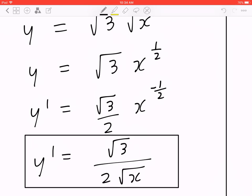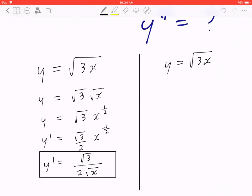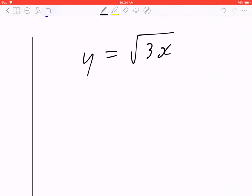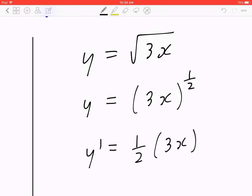Now, if you did not use the first approach, that's perfectly fine. Here's another method. Before finding y prime, you can rewrite this as 3x in brackets to the power of half. Now when you find y prime, you bring half to the front, you multiply 3x in brackets to the power of negative half times the derivative of 3x.